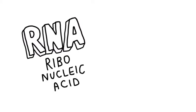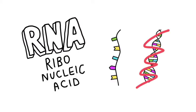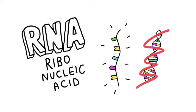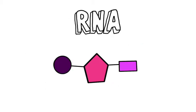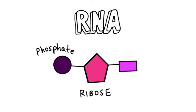RNA, ribonucleic acid, is similar to DNA but it is single-stranded rather than double-stranded. The subunits of RNA are made up of a pentose sugar called ribose, a phosphate and a base.